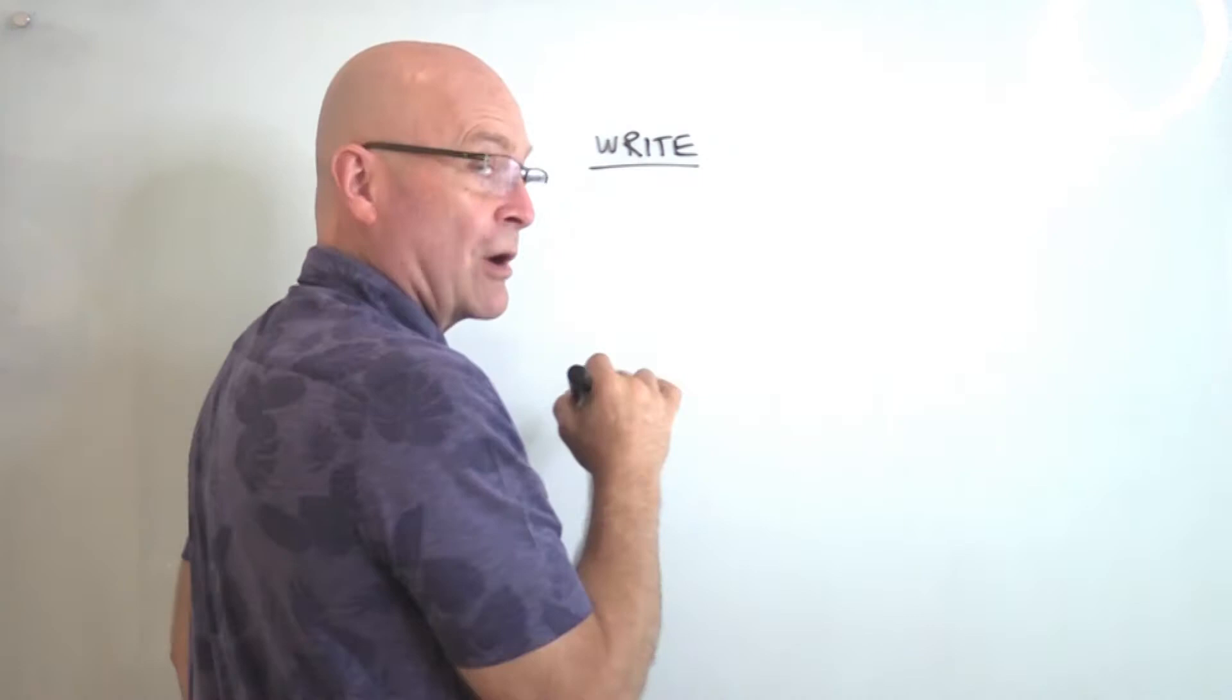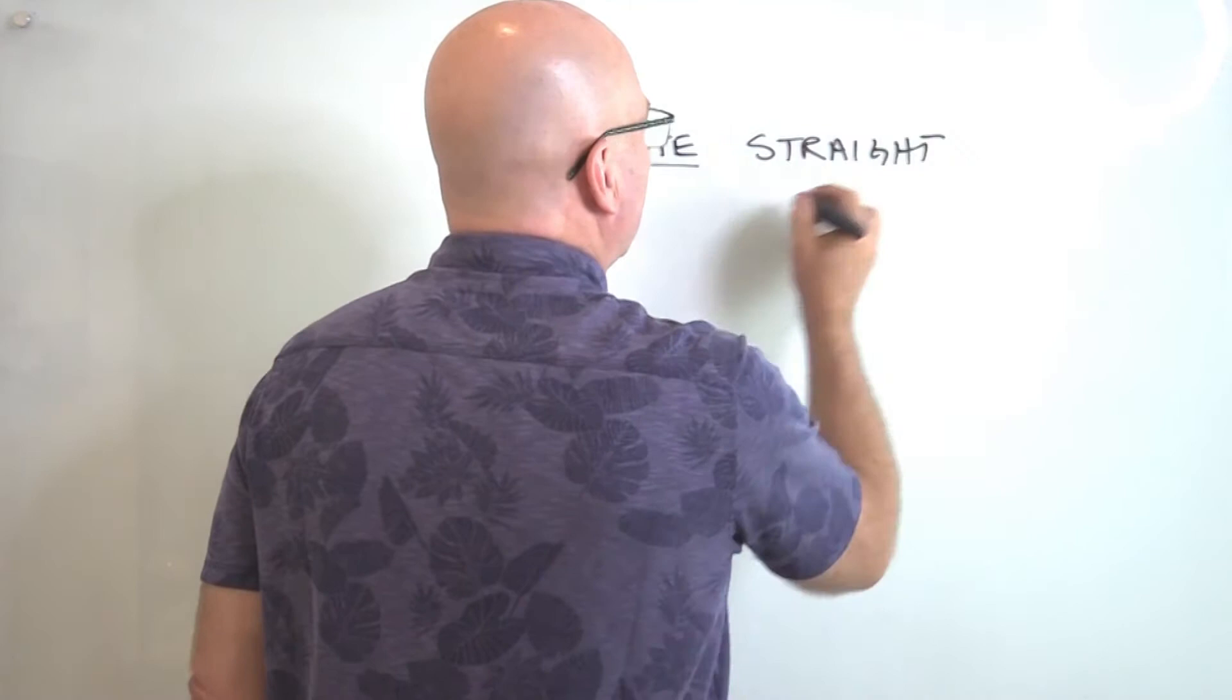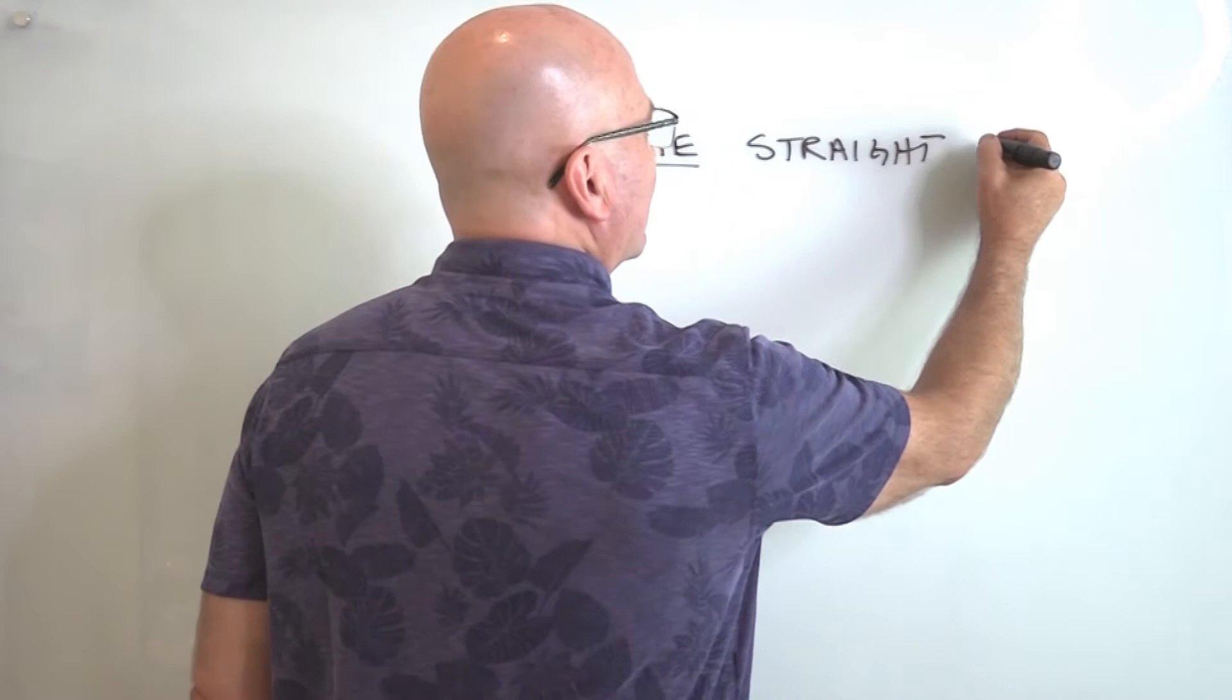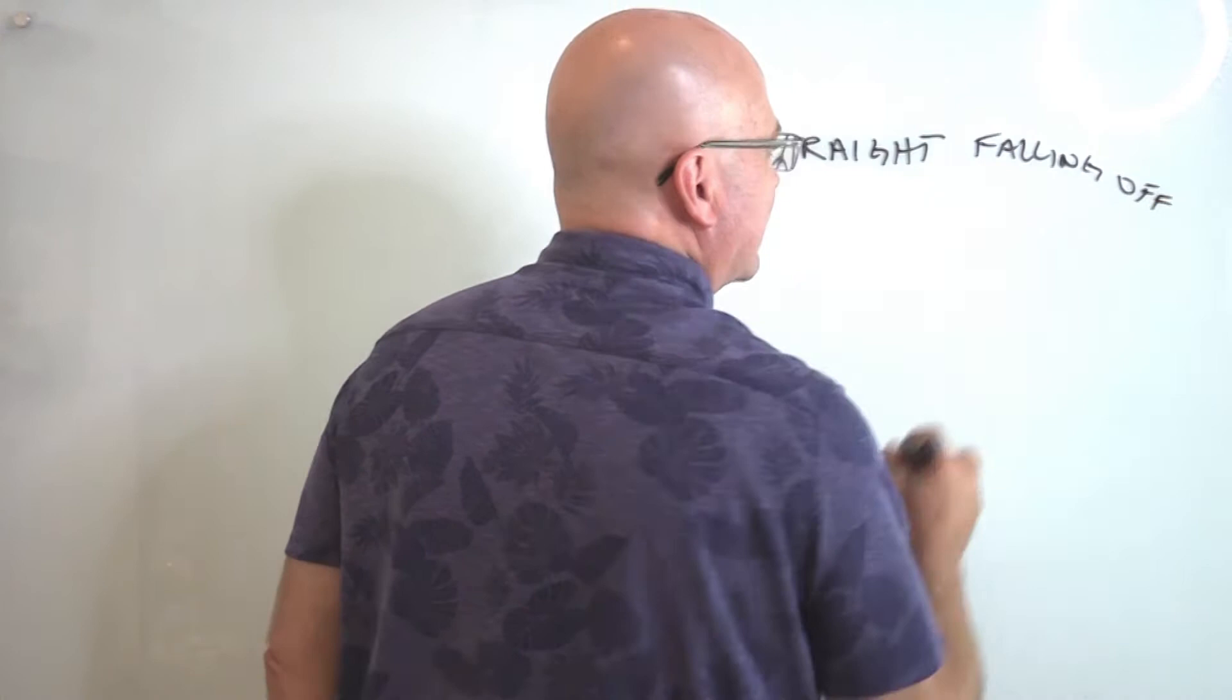So when I write straight, I want to make sure that I'm moving my arm with it, but I don't want it to extend too far because I'll start falling off the board as I start going out. And that's not something we want to do.